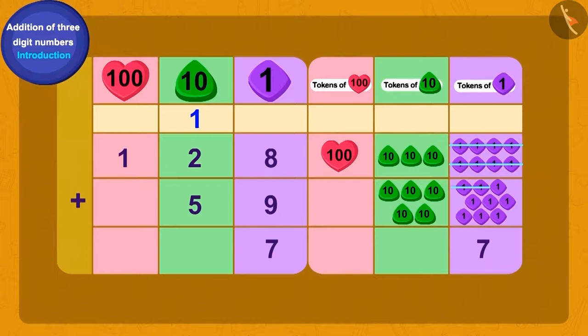We will write this one tens token along with the rest of the tens tokens. We can show this by writing a 1 over 2. This process is called carryover. How many tens tokens do we have now? 8.